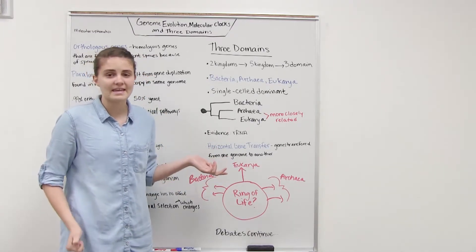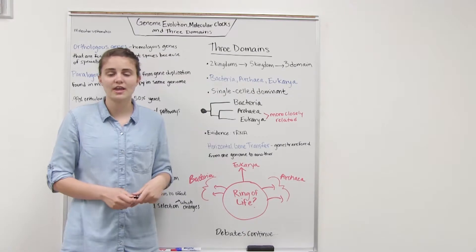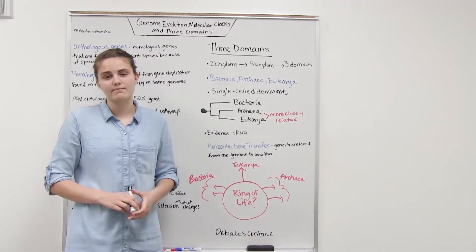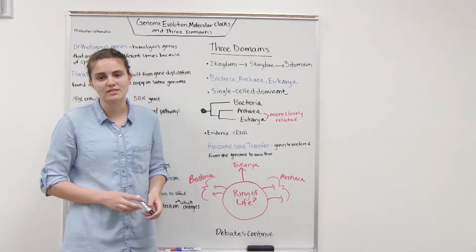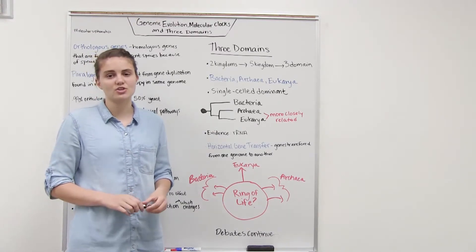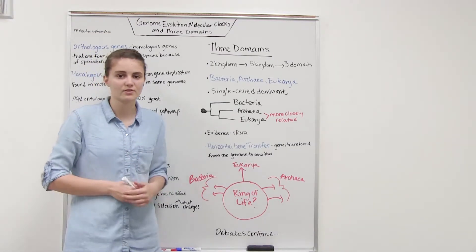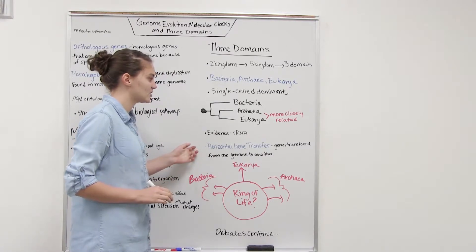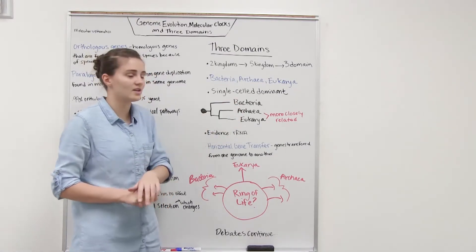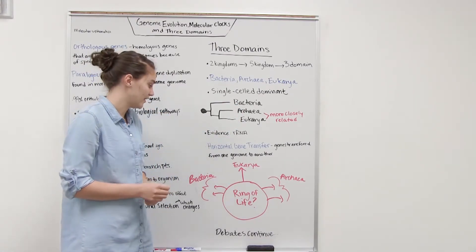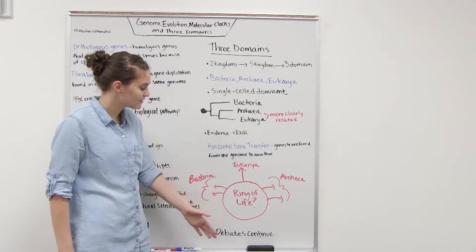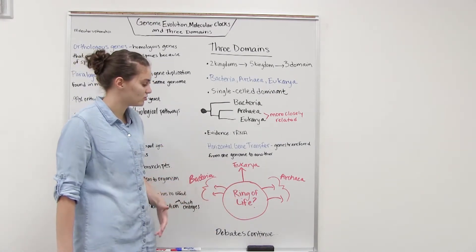In Bio 180 when you were talking about bacteria you learned about things such as conjugation and transduction in which genes were transferred from bacteria to bacteria. This is potentially one explanation why there's some similarity in the genes between bacteria and eukarya. There's still some debate of the relationships that these two share.